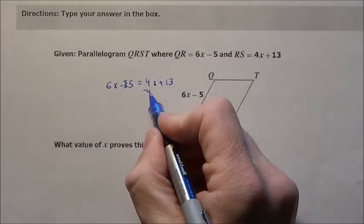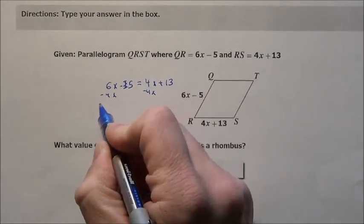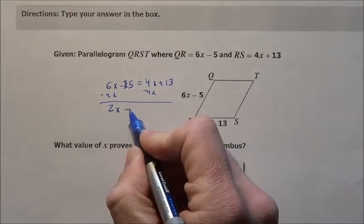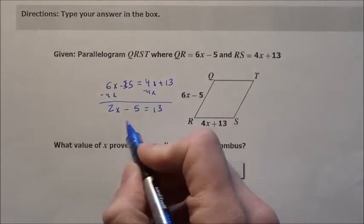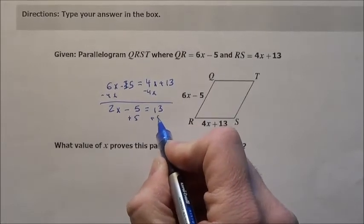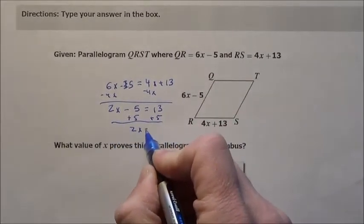Well, if I subtract 4x from both sides, I'm going to get 2x minus 5 equals 13. I now add 5 to both sides, 2x equals 18.